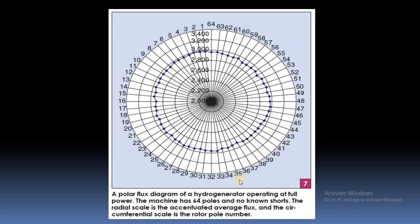Here we can see a hydro generator operating at full power — the generator is synchronized and operating at full power. This machine has 64 number of poles, and by using this online technique we can determine which pole has shorted turns. From this plot, there is no significant deviation of the magnetic flux density, so no known shorts are found. The radial scale shows average flux from 2000 to 2600, and these are the pole numbers from 1 to 64 — the average flux is almost the same for each pole.